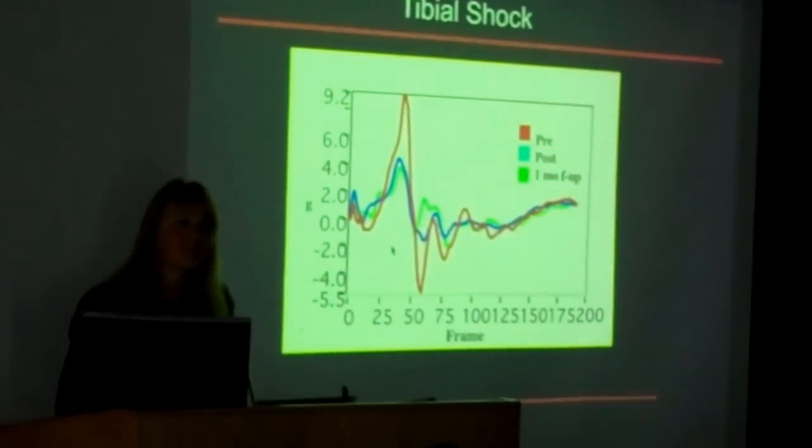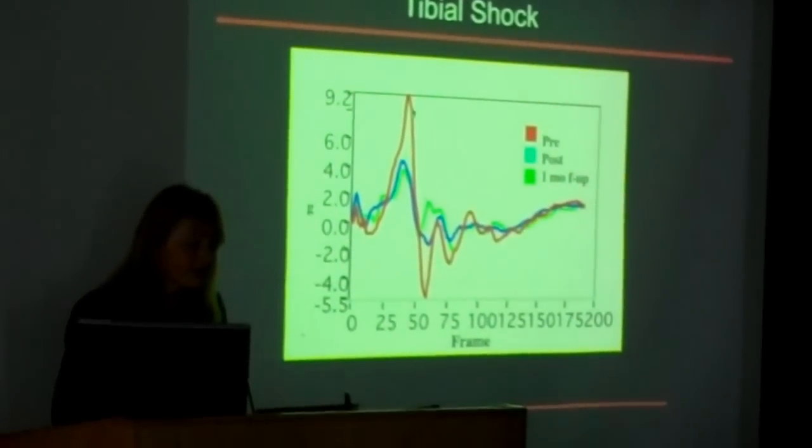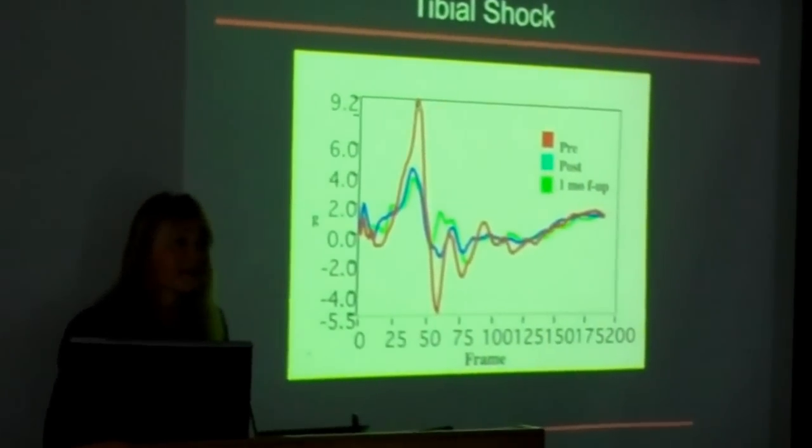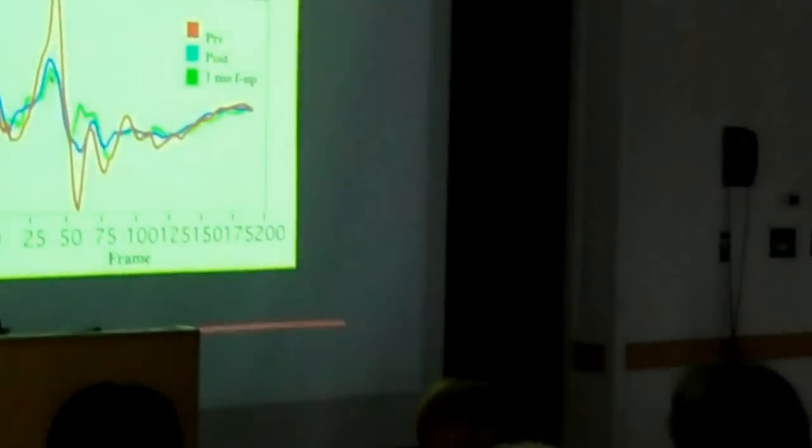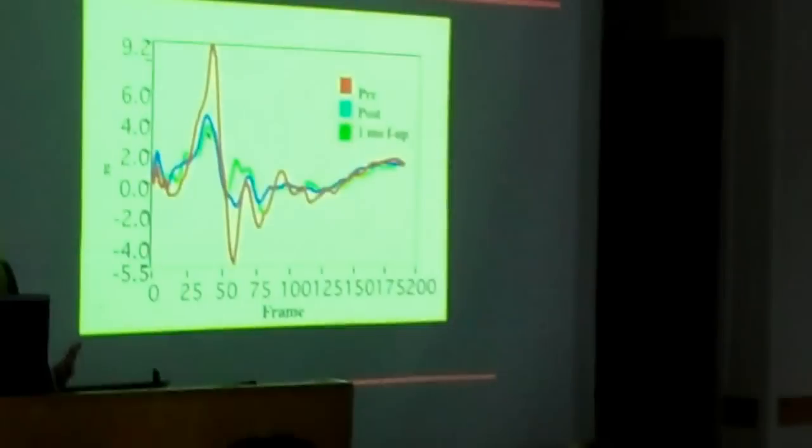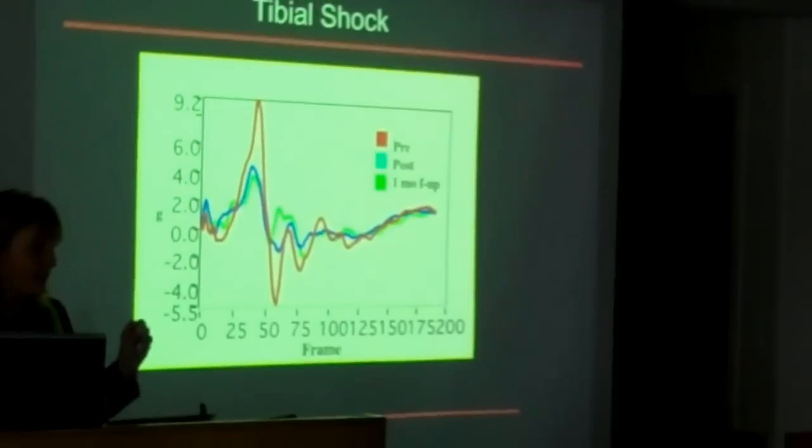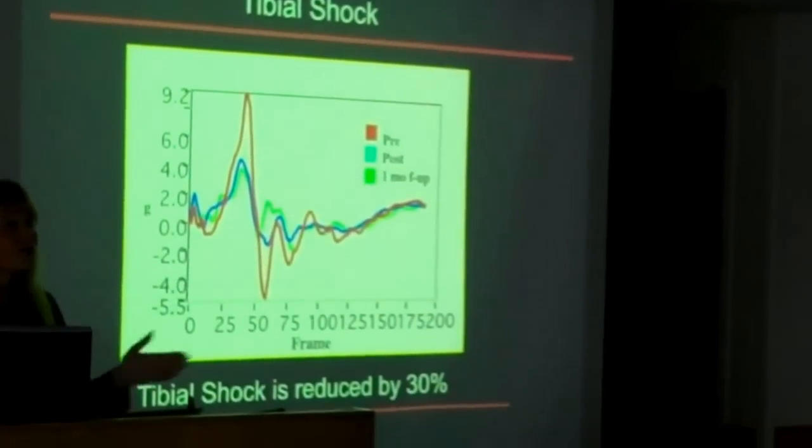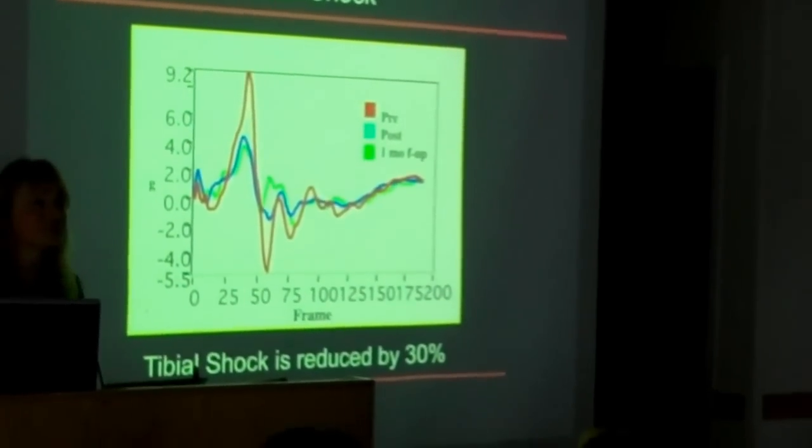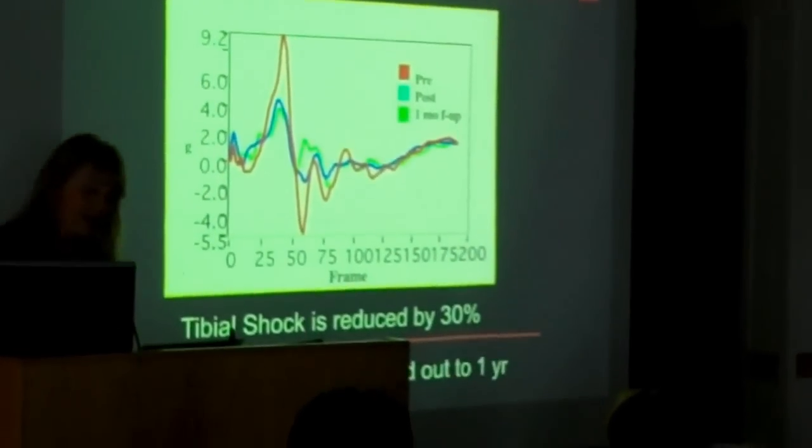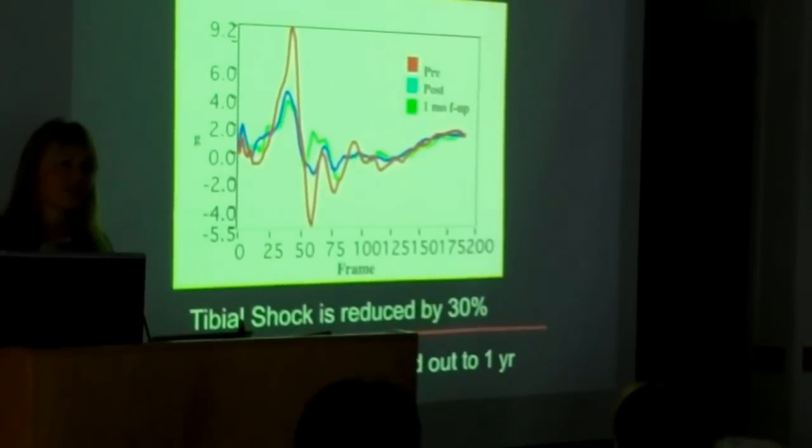So here are some results of our retraining. This is a single individual who was at nine Gs pre. The blue is post. And this is just a one month follow up, the green is one month follow up. And you can see that they clearly are maintaining that reduced loading as well as the patterns. It's very similar. Overall, in our subjects, we've been able to reduce tibial shock by 30%. And changes have persisted out to a year.